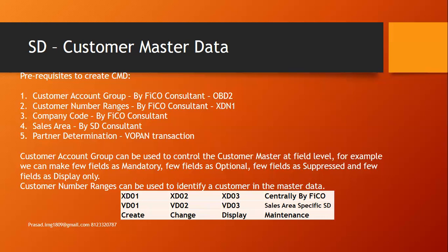In SAP SD customer master data, we use transaction code XD01 to create, XD02 to change, and XD03 to display customer master data centrally — typically used by the FICO consultant. VD01, VD02, and VD03 are sales-area-specific transaction codes used by the SD consultant.